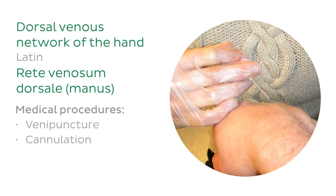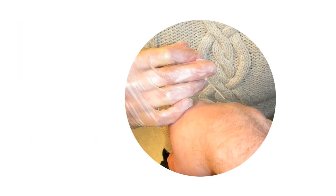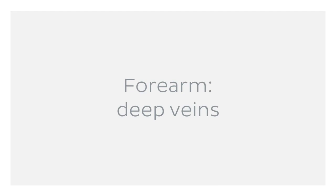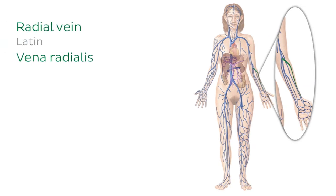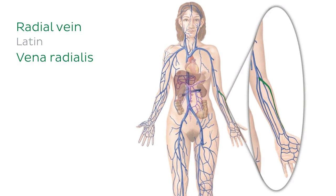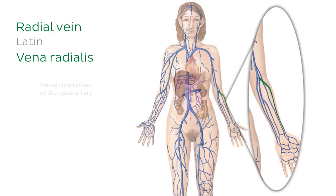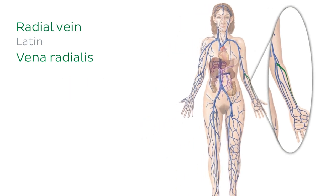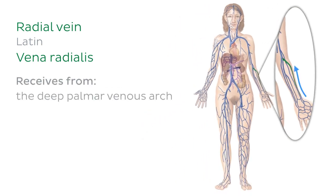Now that we've covered the important venous networks of the hand, let's move on to the forearm — starting with the deep veins. The first are the radial veins, highlighted here in green. You can think of the radial veins as being on the outer side of the arm when viewed in the anatomical position, just like the radius of a circle refers to its outer edge. The radial veins are the venae comitantes of the radial artery and receive tributaries from the deep palmar venous arch, travelling up the forearm to drain into the brachial veins.